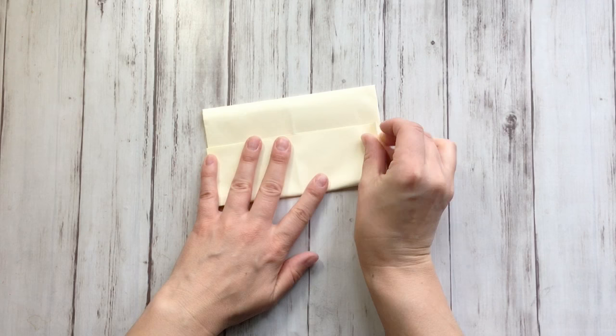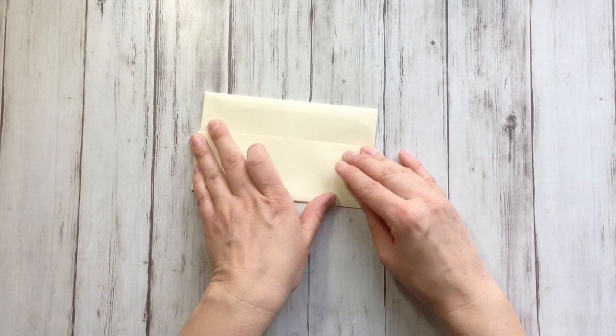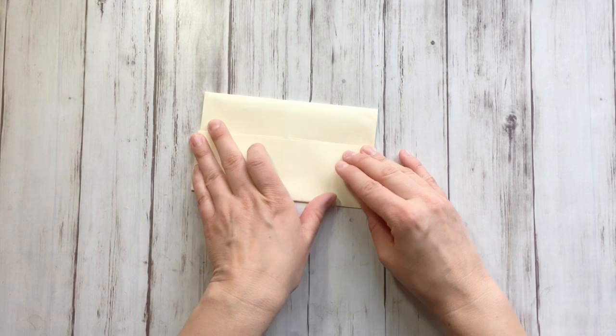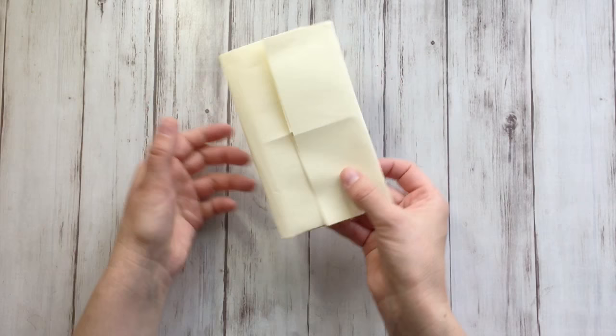So fold the top part about a third, fold the bottom part about a quarter of the total length. There you have your envelope, and of course this one you need to seal with some wax or something else like a sticker.